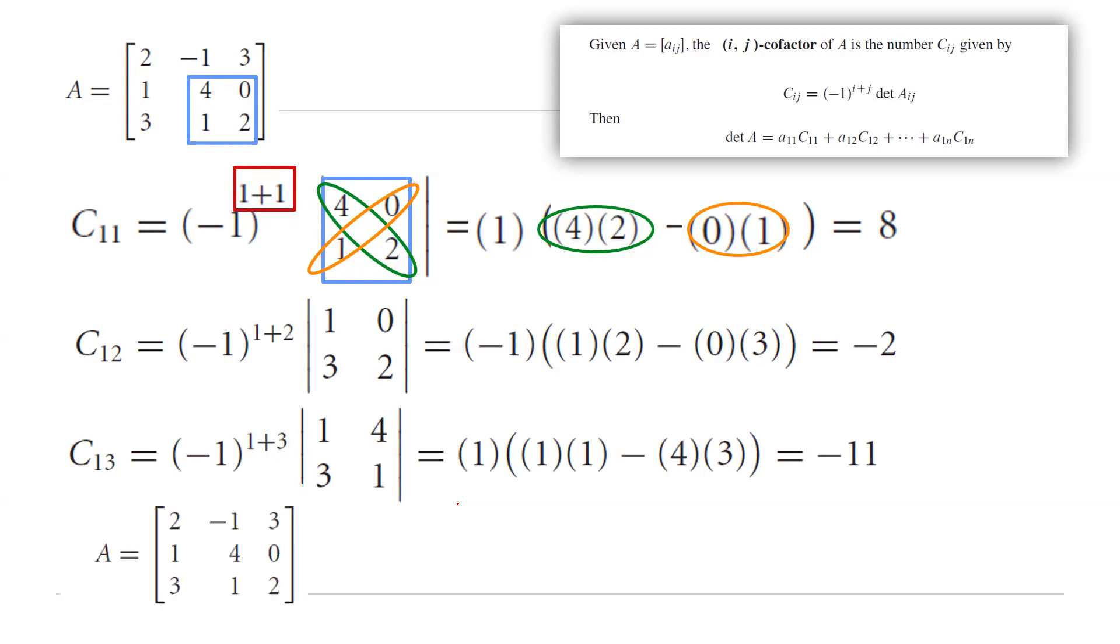Now going back to the matrix itself, the determinant of A is 2 times 8 plus negative 1 times negative 2 plus 3 times negative 11, which gives you negative 15. So this is the determinant of this matrix.